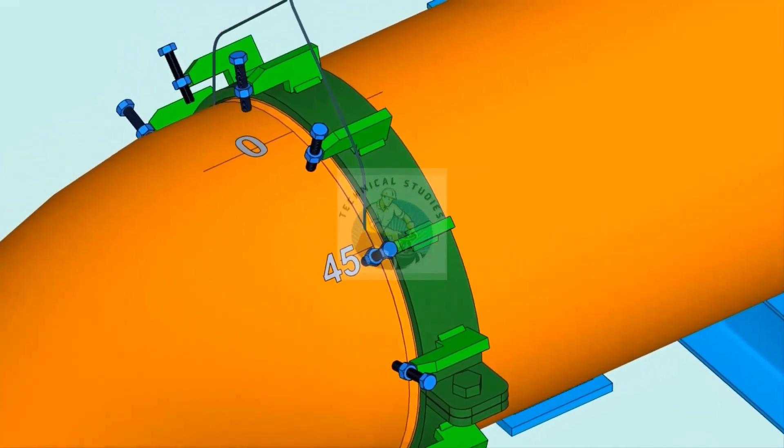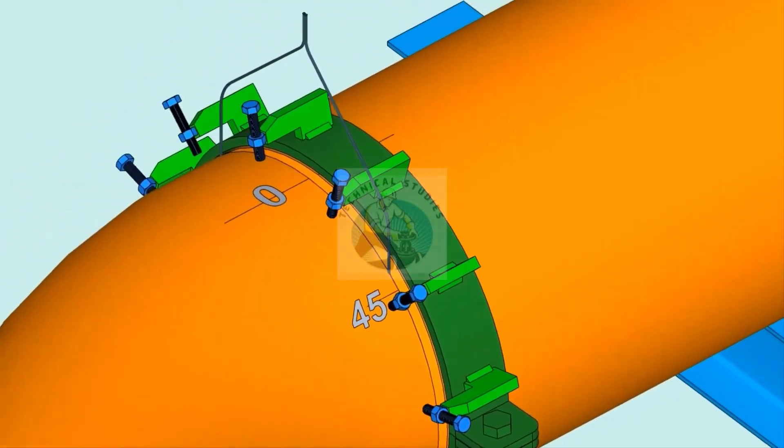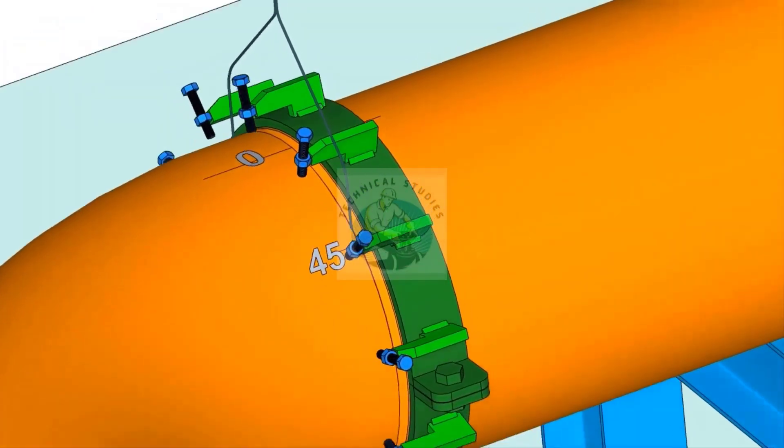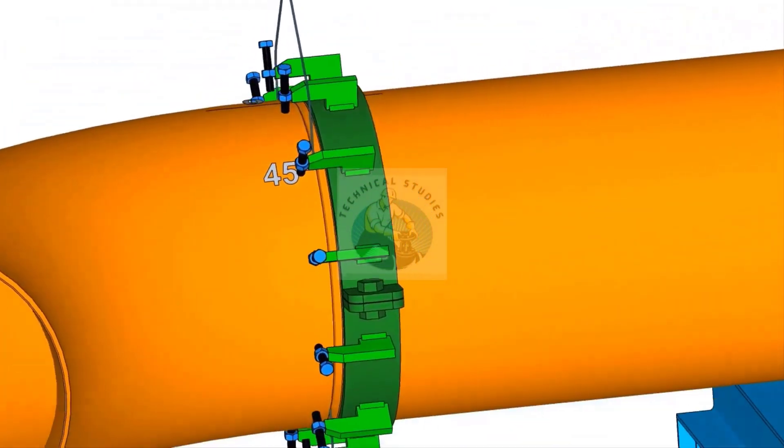Put the gap rod in the joint. Now slowly rotate the elbow until the 45 degree mark comes opposite to the 0 mark on the pipe.